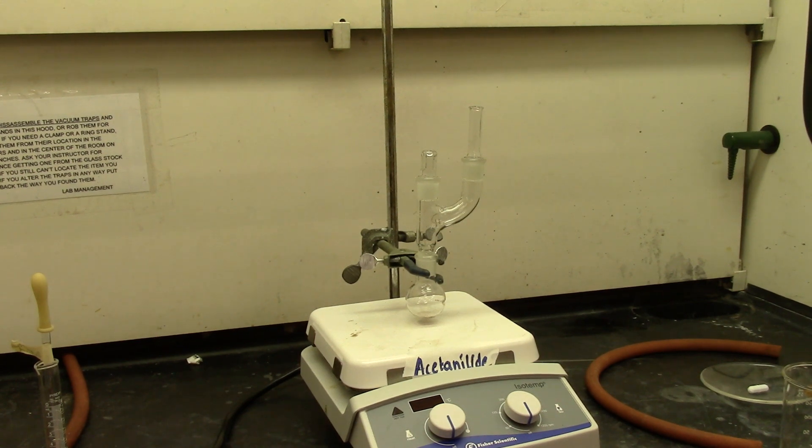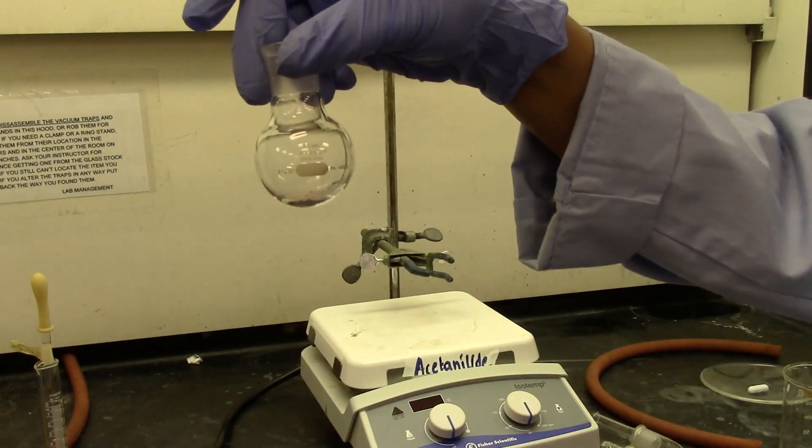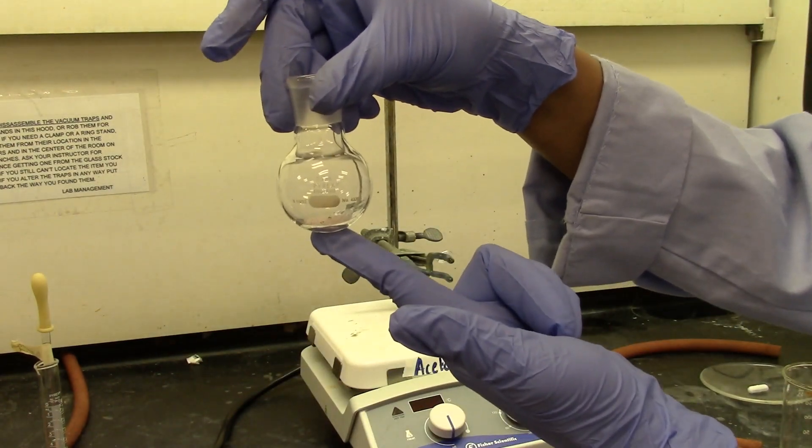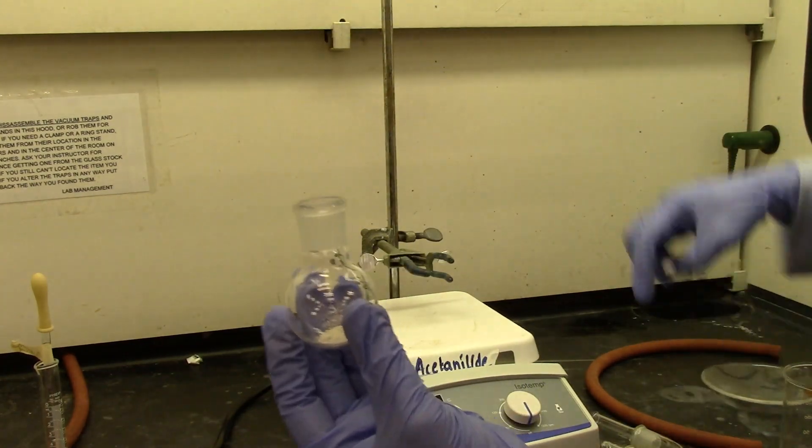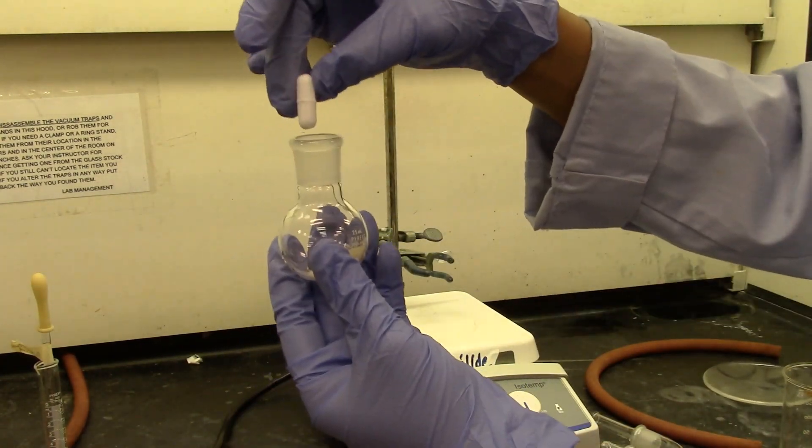So this is the bromination setup for acetanilide. I have labeled it since we have three different setups for aniline, acetanilide, and anisole. I weighed around 0.47 grams of acetanilide. As you can see, it's solid, and we're going to drop a stir bar in there.